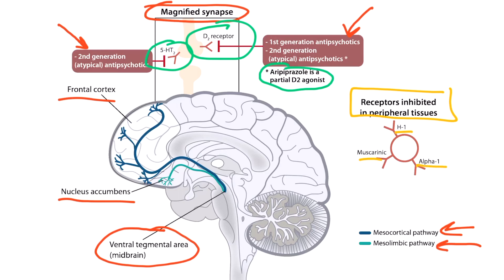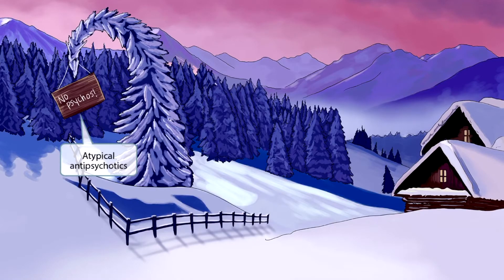The effect of blocking these hormone receptors creates lots of side effects, and these side effects are more often attributed to the first-generation antipsychotics. Now let's dive into the story. This story takes place at a cabin in the snowy woods. The owners decided to put a sign on an atypically shaped tree that says 'no psychos,' and this no-psychos sign hanging from the atypically shaped tree will be our symbol for atypical antipsychotics.